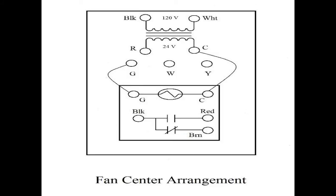This is an example of the wiring diagram of a fan center arrangement. You'll notice the black and white wire at the top is for your transformer primary, 120 volts. Then you'll also have an R and a C wire. The R is your feed to your thermostat, it's your hot side of the transformer.